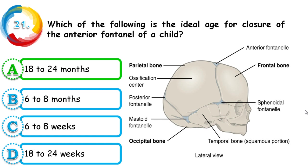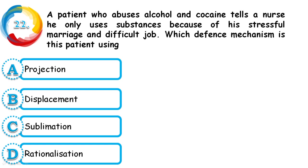Question 22: A patient who abuses alcohol and cocaine tells a nurse he only uses substances because of his stressful marriage and difficult job. Which defense mechanism is the patient using — projection, displacement, sublimation, or rationalization? The correct answer is rationalization, because the person is giving rational reasons for their own mistake. Each year, at least one question is asked from the defense mechanism area, so don't miss it.